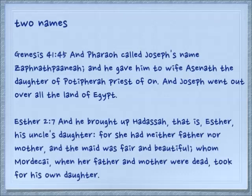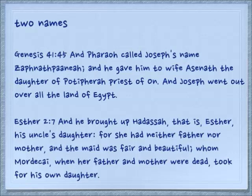In Genesis 41-45, Pharaoh called Joseph's name Zephnat Pa'aneah. Presumably this is some Egyptian name, but inside it, in the sound of it and the spelling of it, is hidden a Hebrew name.